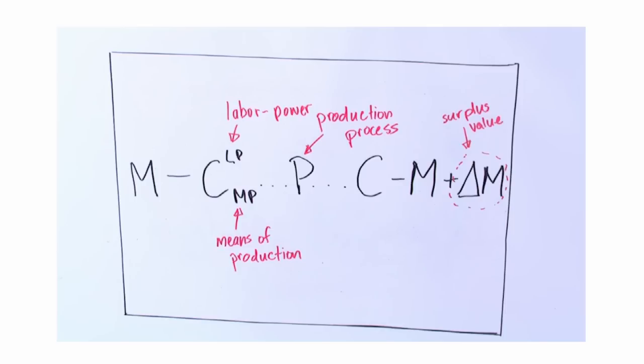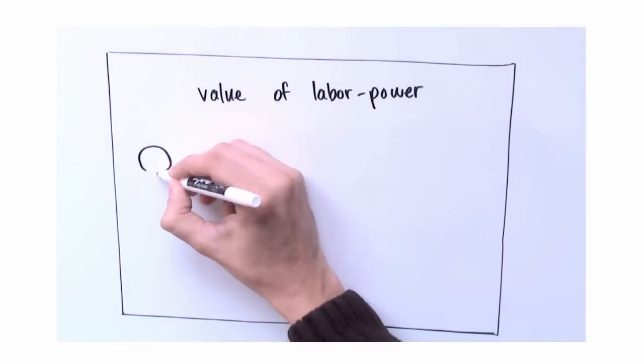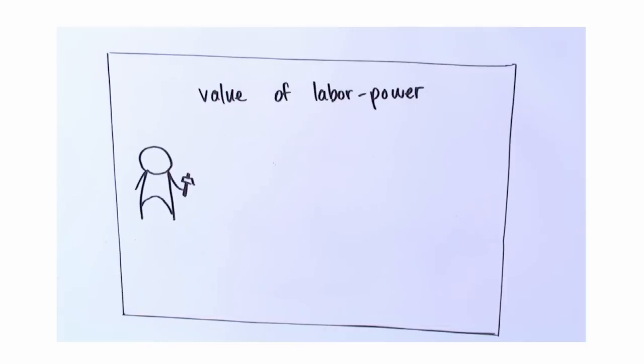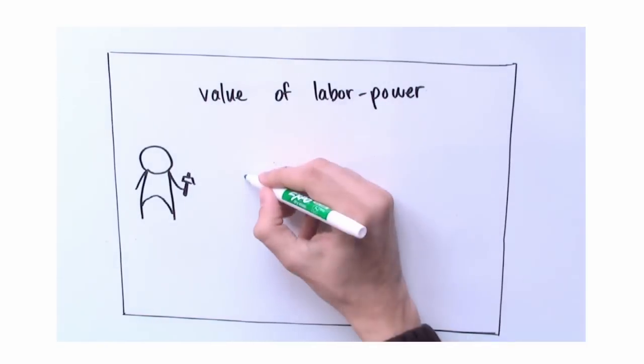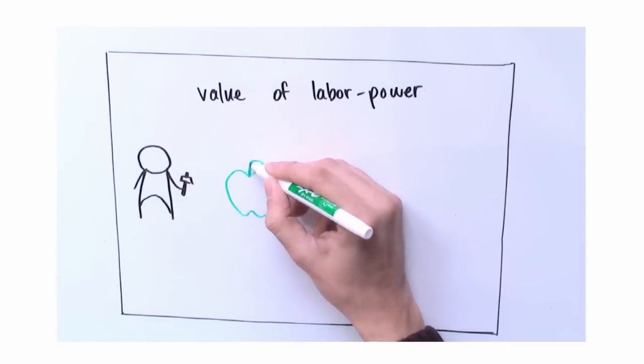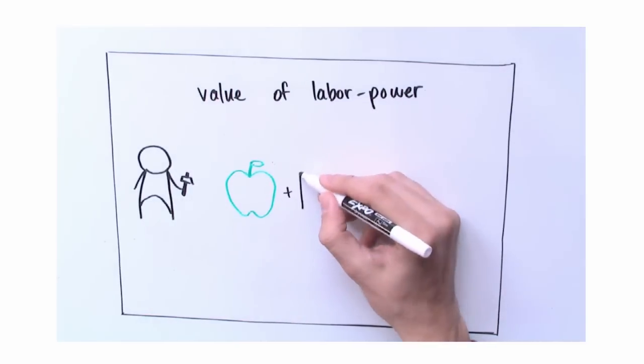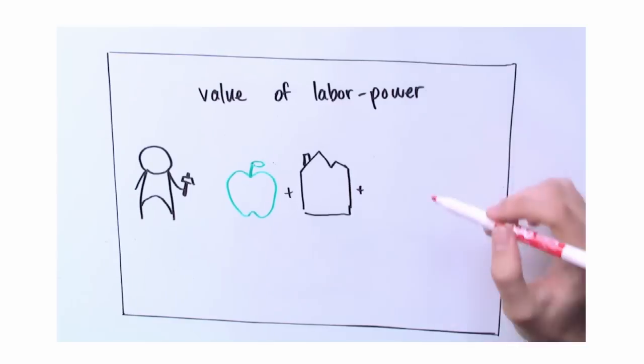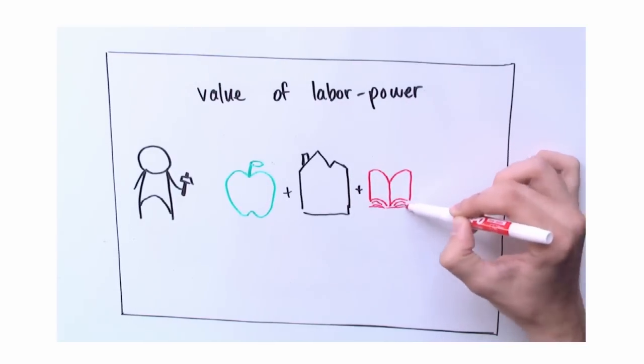This surplus value, as Marx called it, comes from the fact that the worker produces more in value than he or she is given in monetary compensation. The value of labor power, like all other commodities, consists of the items necessary for its production. What is necessary for the reproduction of labor power can vary from place to place. In reality, labor power can be reproduced on a bare minimum compensation. Think of underdeveloped parts of the world, where meager wages are just enough to sustain some kind of existence for the worker, so that he or she can return the next day to produce more value.